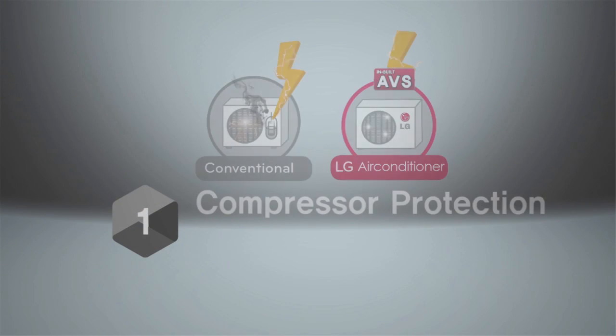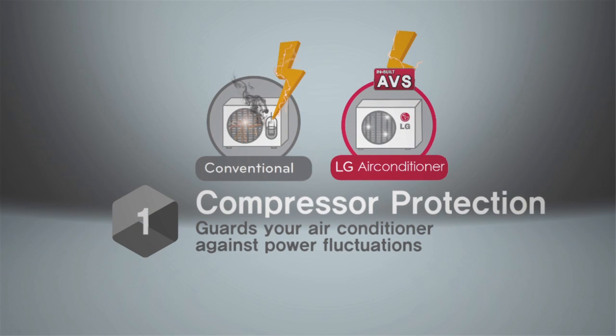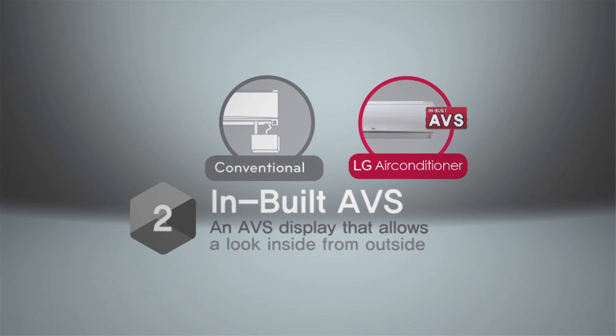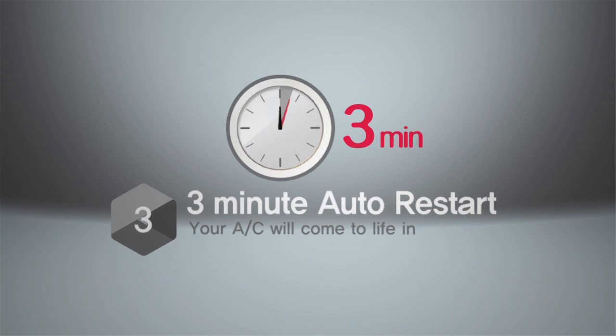LG automatic voltage switcher guards your air conditioner against power fluctuations. An AVS display that allows a look inside from outside. Over voltage? No problem. Your AC will come to life in just three minutes with LG's AVS.